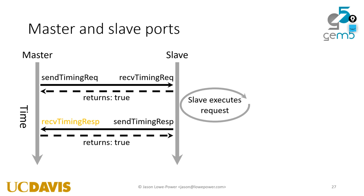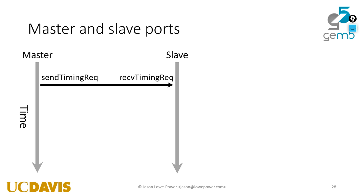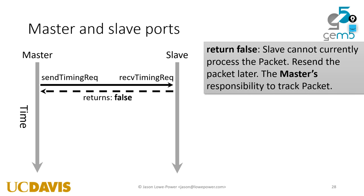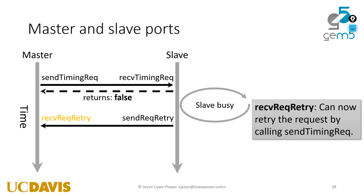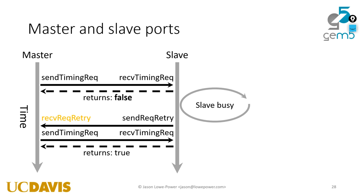Similarly, the master returns true if it can currently handle that response. If it's busy doing something else, it has to return false. Now let's say the master calls the slave and the slave returns false - it's busy handling another request and can't handle the new request. It's then the master's responsibility to track this packet to make sure it can resend it later. Whenever the slave finishes with that other request, it will call send retry, so the master knows it can try to send again. This way the master isn't just polling the slave and wasting CPU resources. The slave will say it's ready, and then the master calls send timing request again.